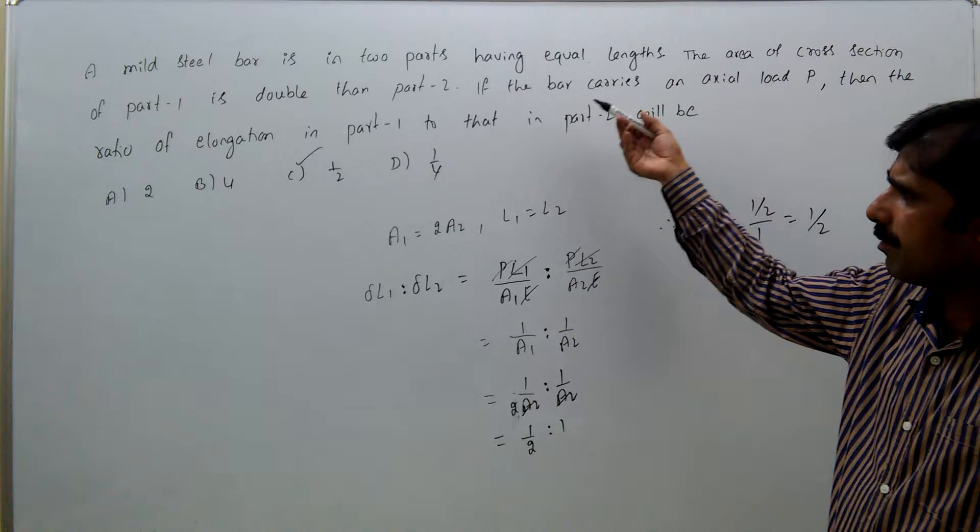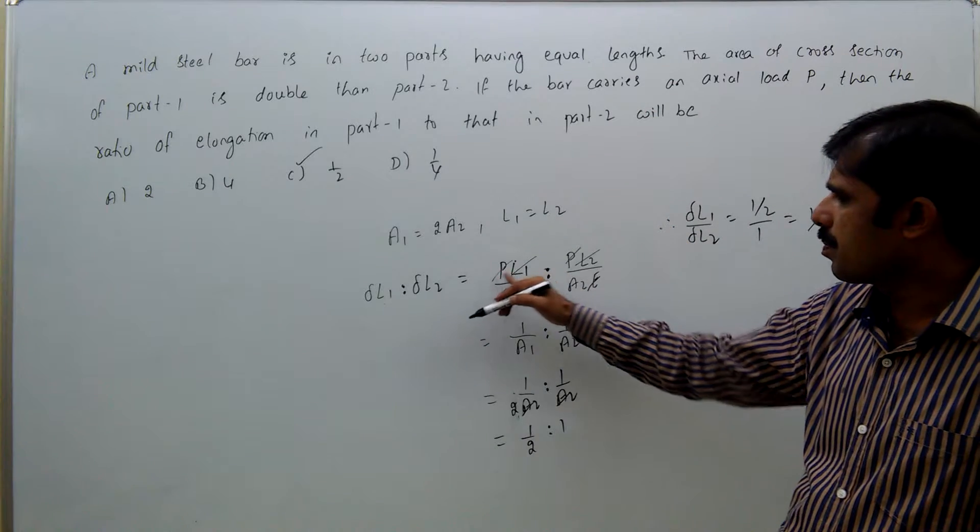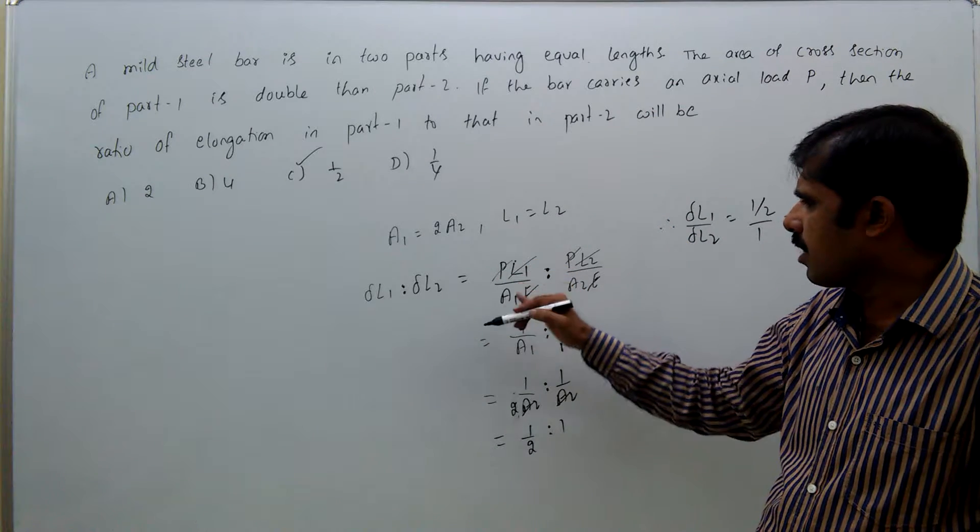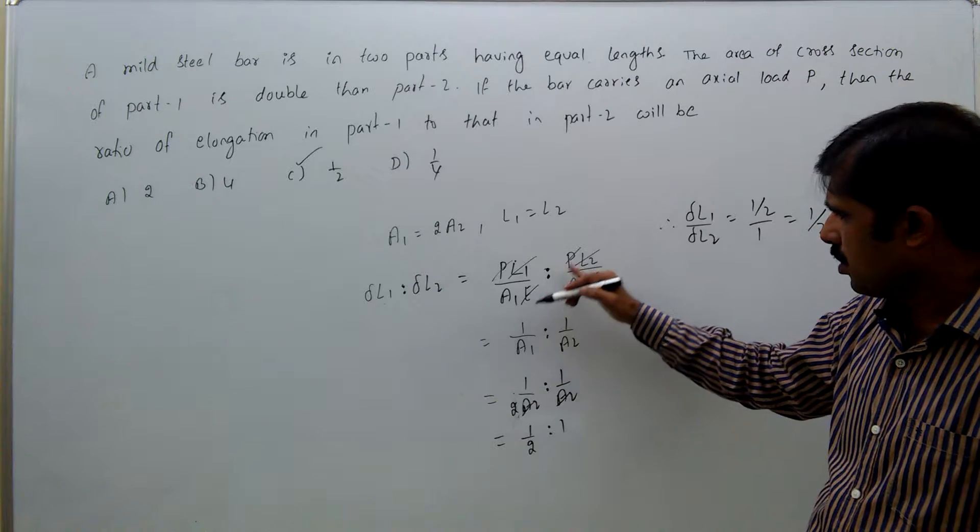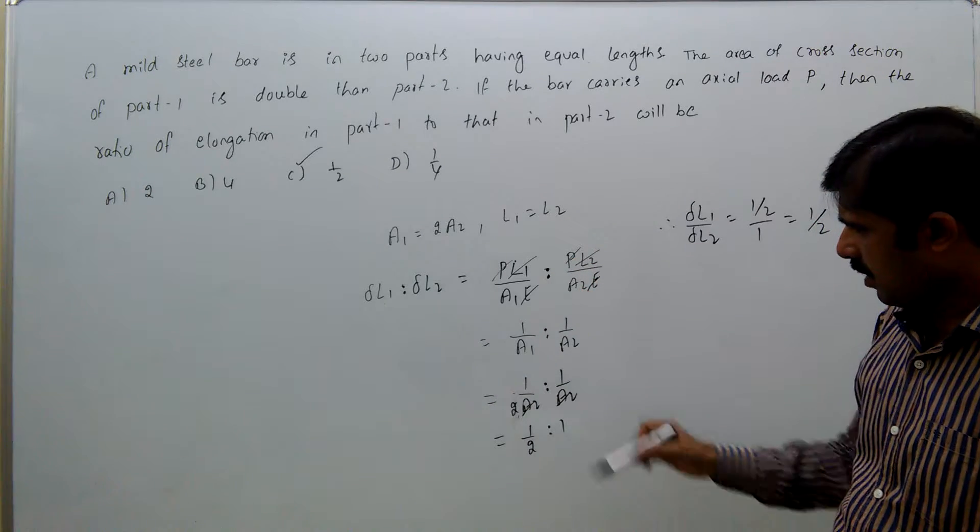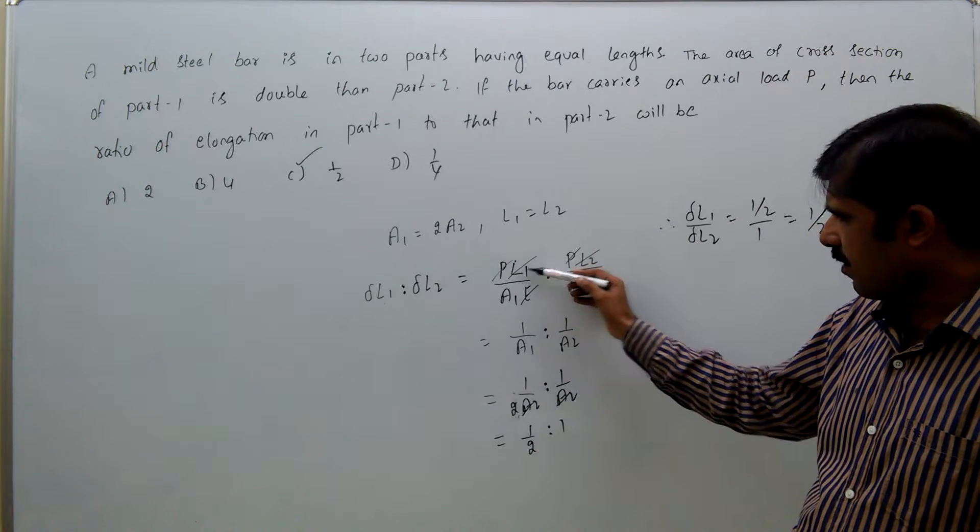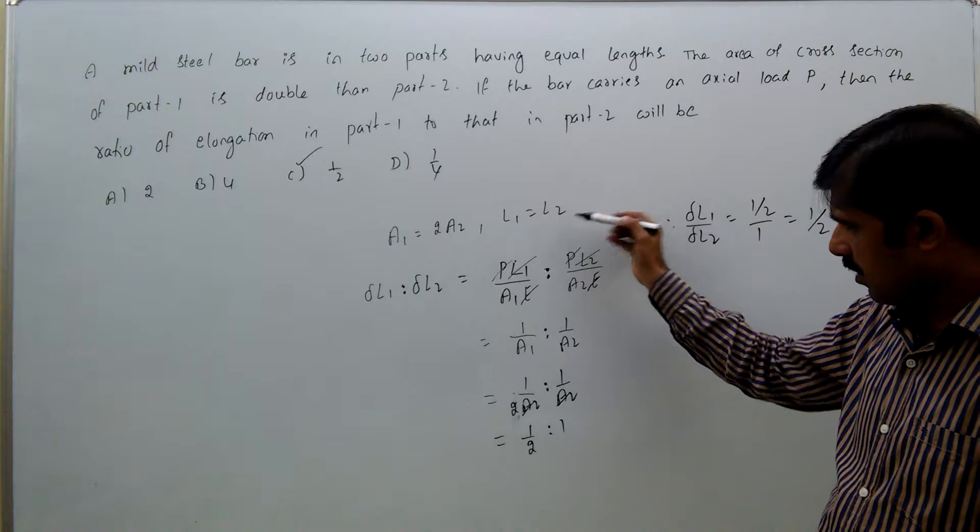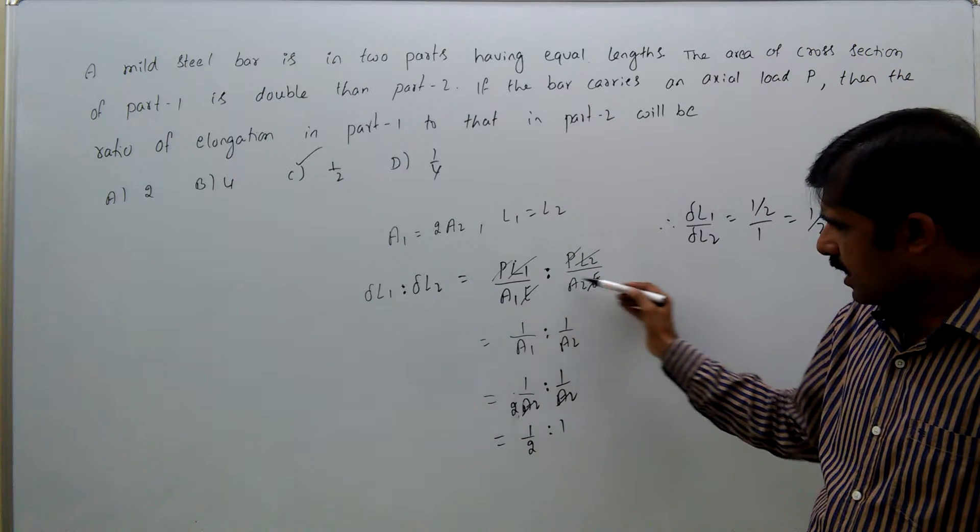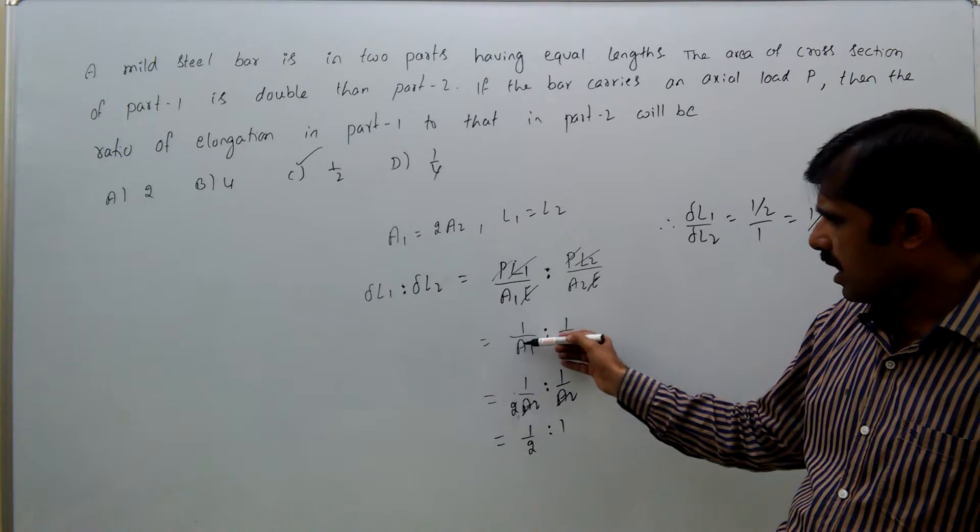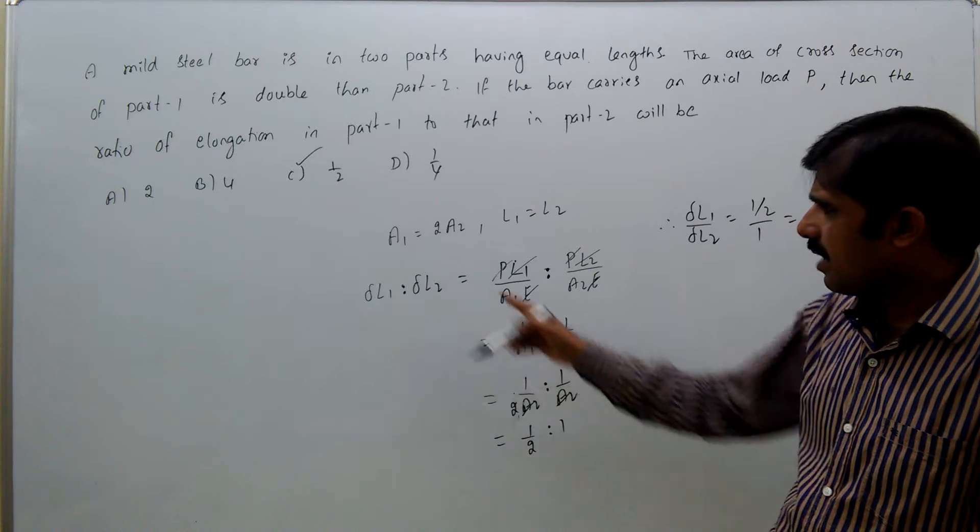Load will be same for both the rods. So PL1/(A1E) to PL2/(A2E). Here P gets cancelled, L gets cancelled because L1 and L2 are same, E modulus gets cancelled. So 1/A1 is to 1/A2.